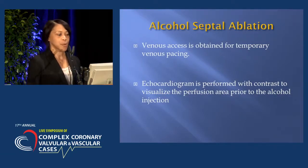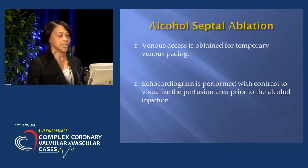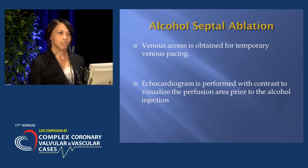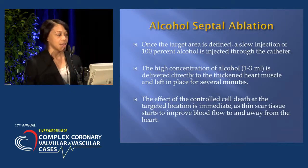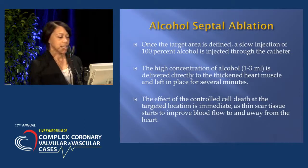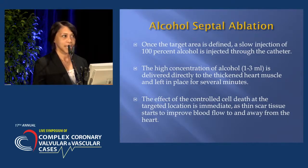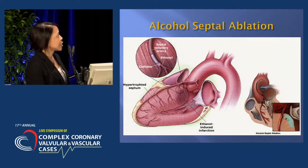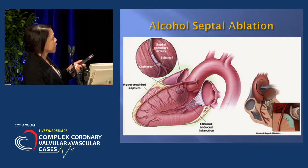Venous access is obtained for temporary venous pacing in the event the patient goes into complete heart block. An echocardiogram is performed with contrast to visualize the perfusion area prior to alcohol injection — the echo attending is in the room performing echo simultaneously with the procedure. Once the target area is defined, a slow injection of 100% alcohol is injected through the catheter. The high concentration of alcohol is delivered directly to the thickened heart muscle and left in place for up to five minutes, causing immediate controlled cell death as thin scar tissue starts to improve blood flow.